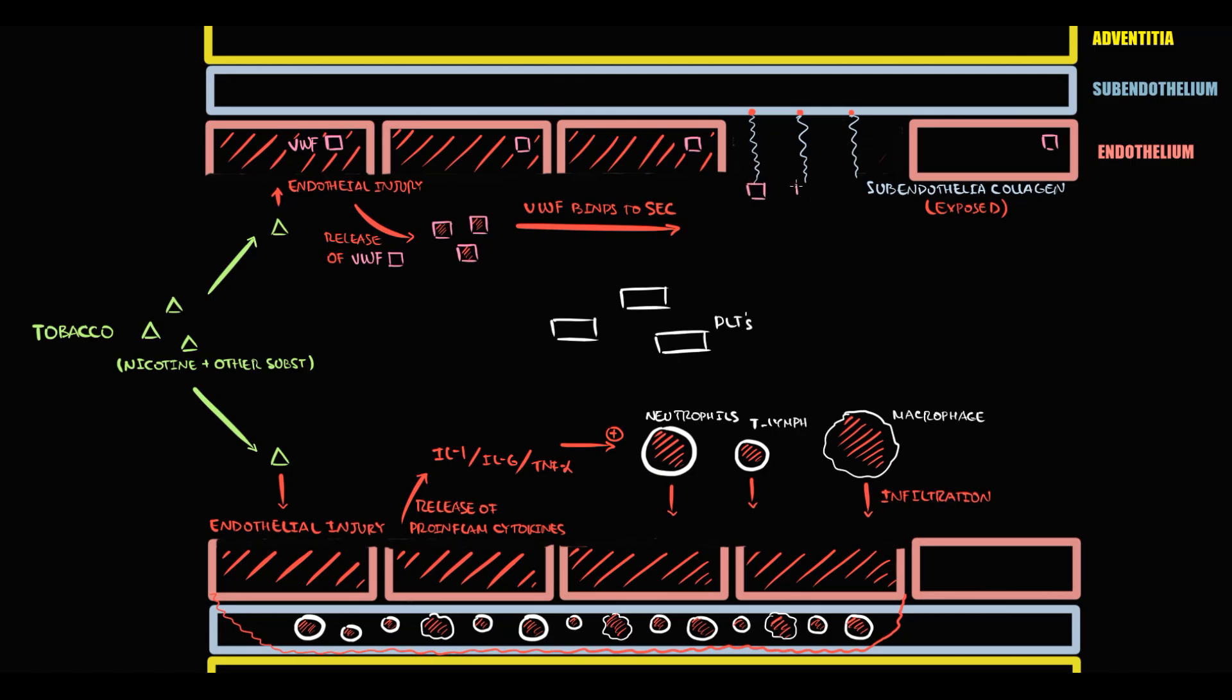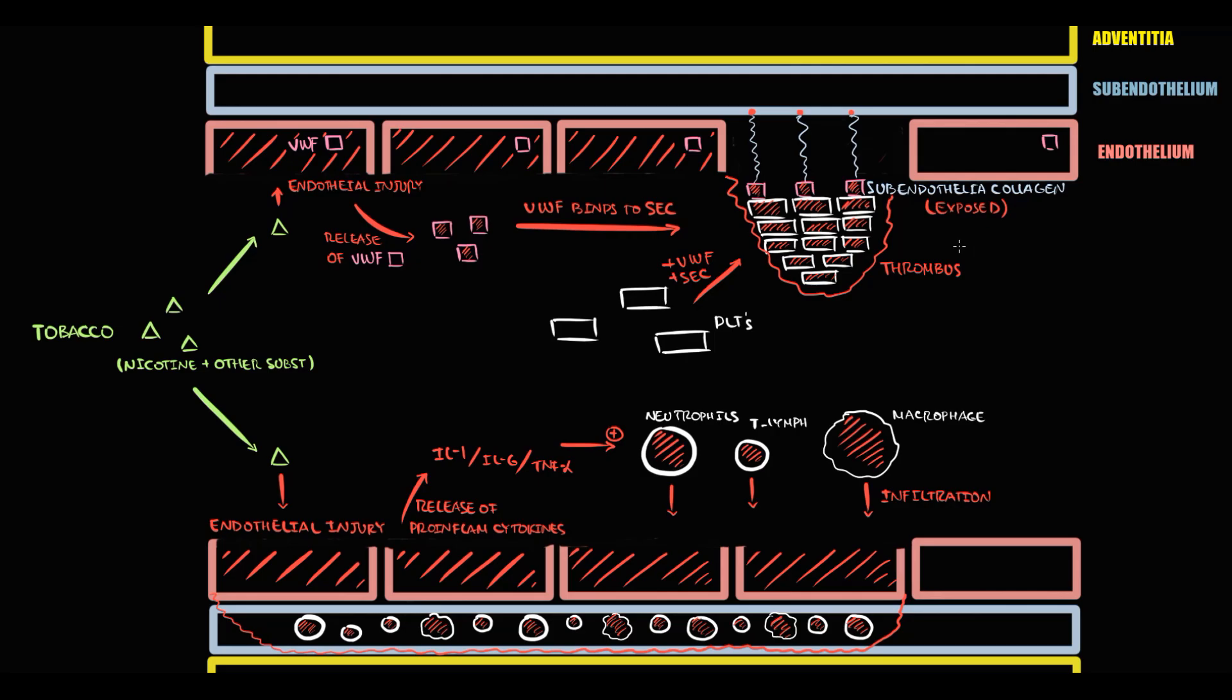And now we have severe endothelial cell injury and we have a lot of von Willebrand factor molecules. In these circumstances, von Willebrand factor molecules bind to subendothelial collagen, thereby inducing platelet aggregation and aggregation of platelets on subendothelial collagen. This results in formation of a large thrombus which obturates the lumen of the blood vessel.